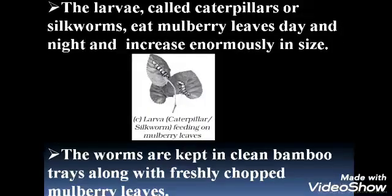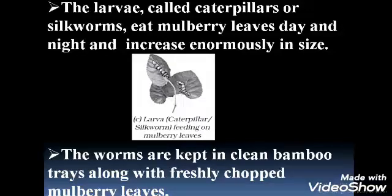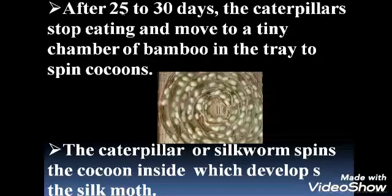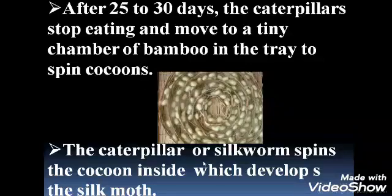The larvae called caterpillars or silkworms eat mulberry leaves day and night and increase enormously in size. This is a picture of a larva or caterpillar feeding on mulberry leaves. The worms are kept in clean bamboo trays along with freshly chopped mulberry leaves. After 25 to 30 days the caterpillars stop eating and move to a tiny chamber of bamboo in the tray to spin cocoons.